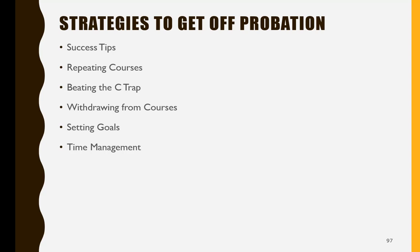What are some effective strategies for success in college? Repeating courses for which you've received a grade below C. Beating the C trap by striving to achieve A's and B's. Withdrawing from courses — though this strategy can be risky if you are also on or close to being on progress probation, so be sure to meet with your counselor prior to withdrawing from any course. Goal setting, as having well-defined goals helps you stay focused. And time management, developing strong time management techniques helps you stay on task and complete work on time.